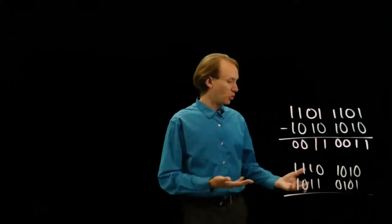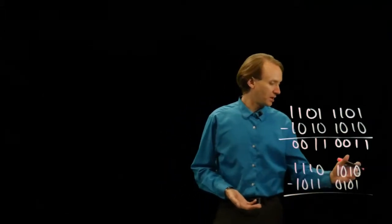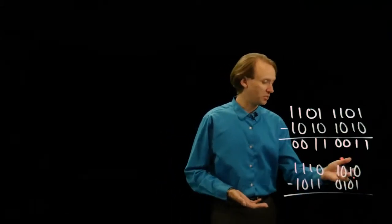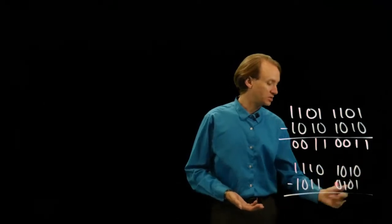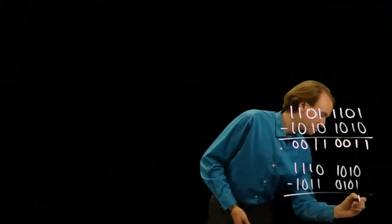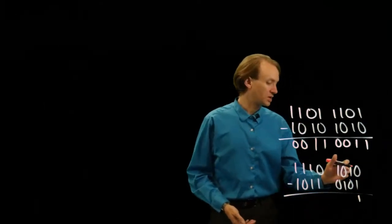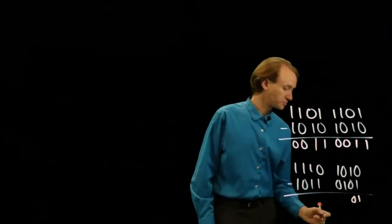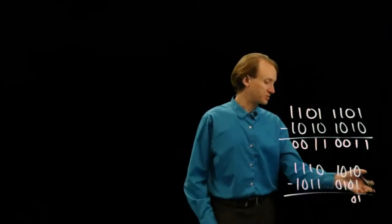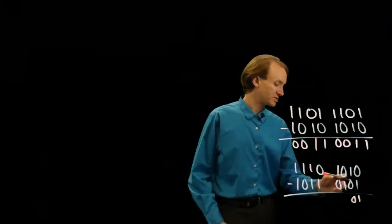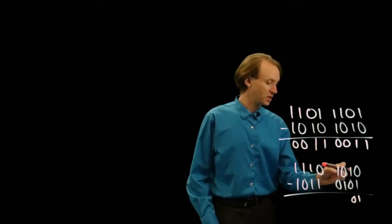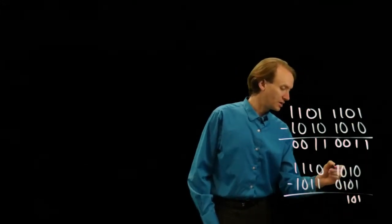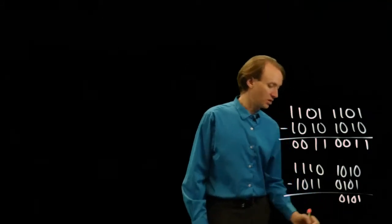So there's a couple more binary numbers. 0 minus 1 — can't do anything, so I need to borrow something. So 10 minus 1 gives me 1. Now I've got a 0 here, so 0 minus 0 is 0. This block will pretty much be the same: so 10 minus 1 gives me 1, and 0 minus 0 is 0.